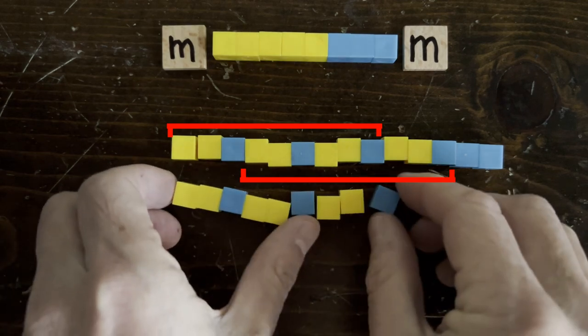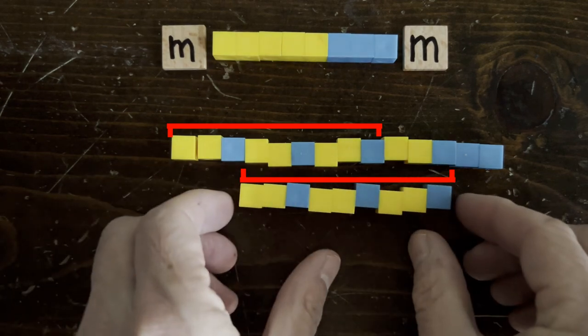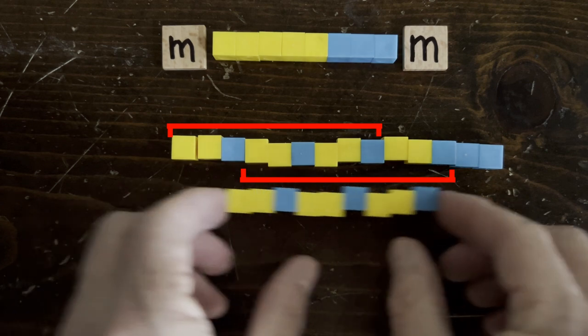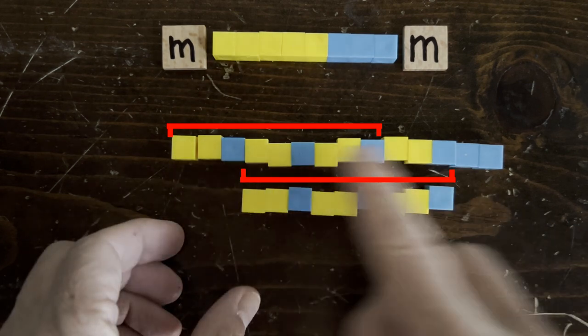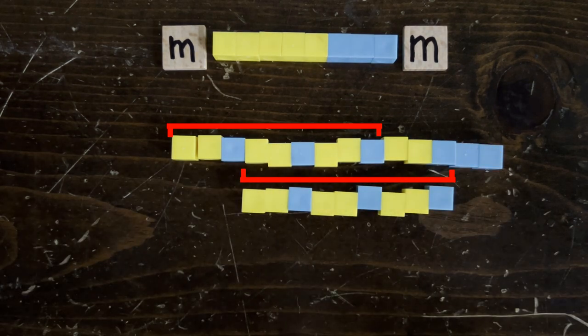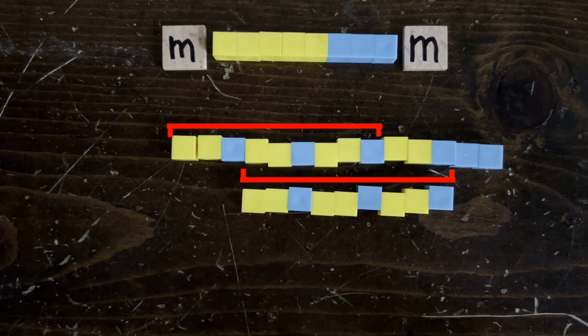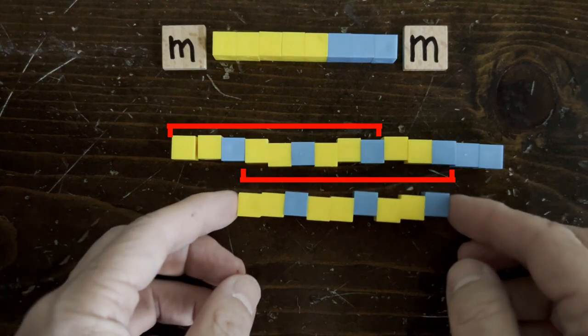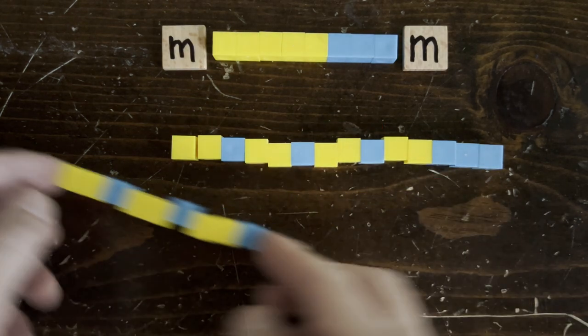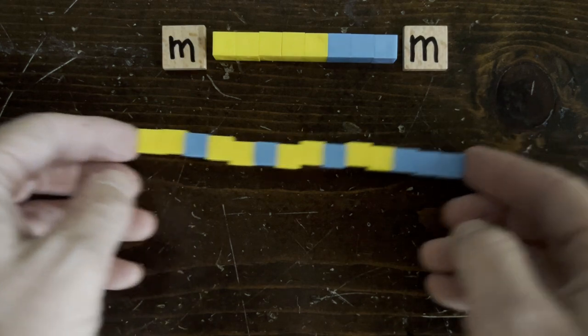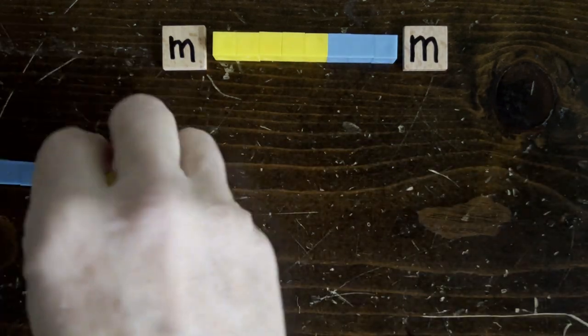So we've really boiled things down now to finding the longest repeated substring inside a binary string. We can consider yellow up moves as one and blue down moves as zero. And biologists who study RNA and DNA, among other people, are very interested in finding long repeated substrings, and there are efficient algorithms to do it.